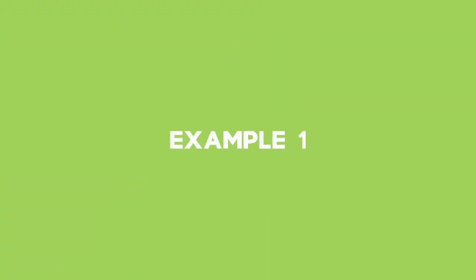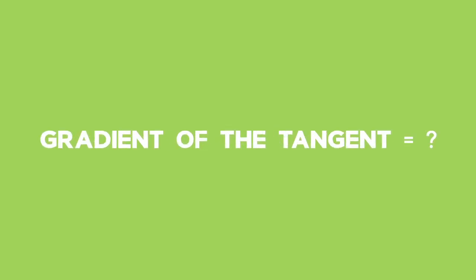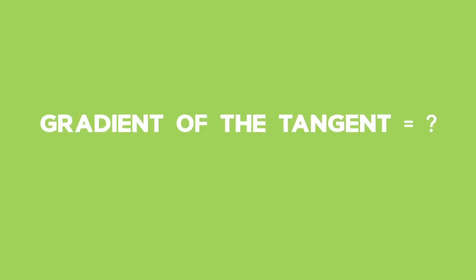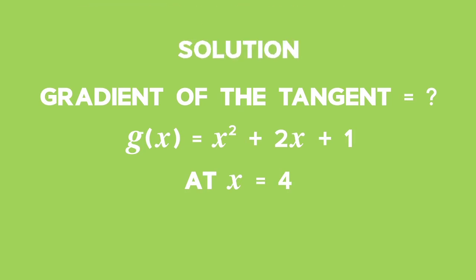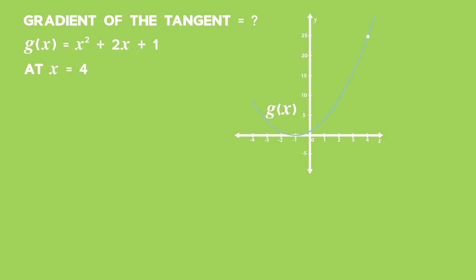Example 1: Find the gradient of the tangent to the curve g(x) = x² + 2x + 1 at the point where x = 4. Solution: Find the gradient function of the curve by finding the derivative of g(x). g′(x) = 2x + 2.